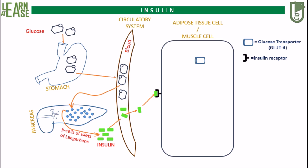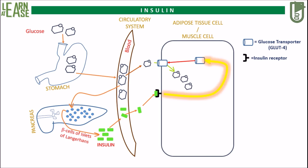Insulin will then pass the signal to the vesicle containing glucose transporter, that is GLUT4, to mobilize and fuse with the cell membrane. This GLUT4 will allow glucose from blood to enter the cell. This video will explain this mechanism in detail.